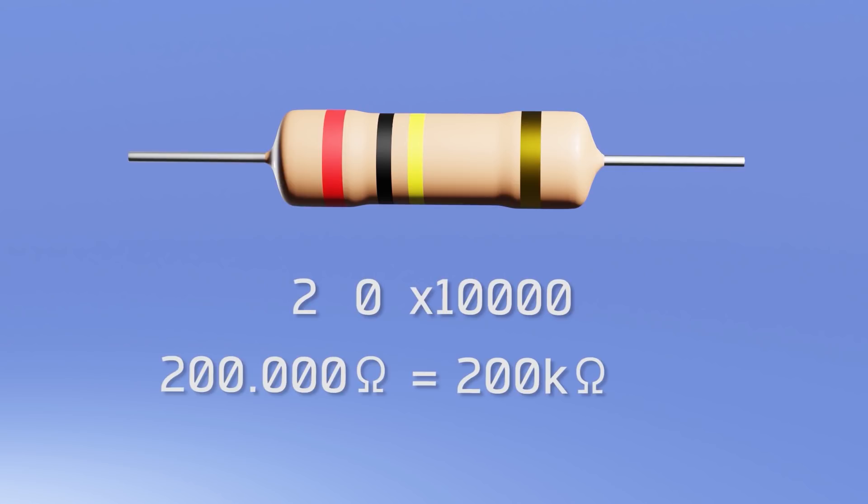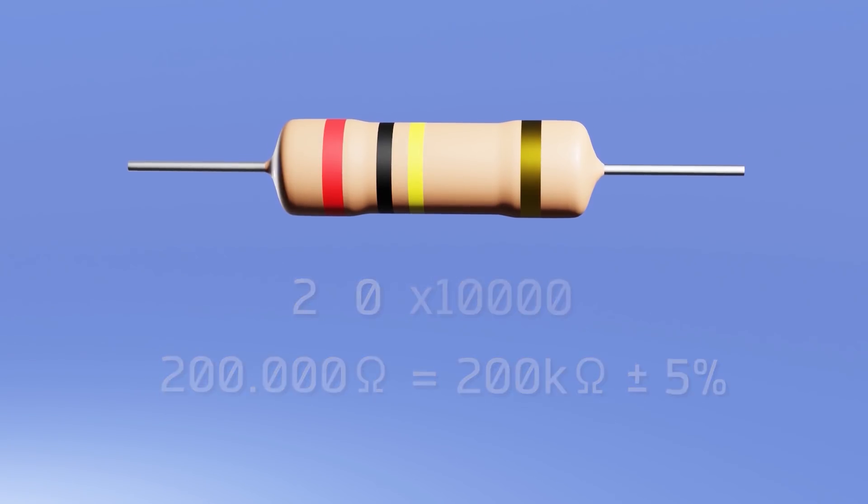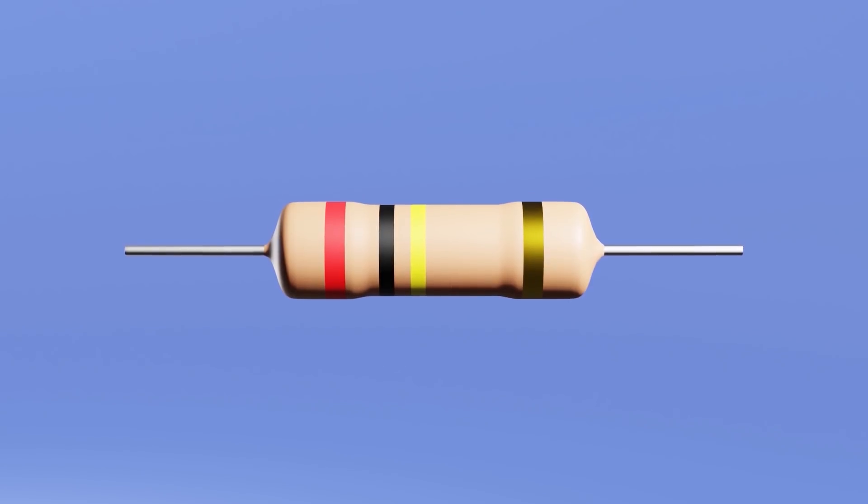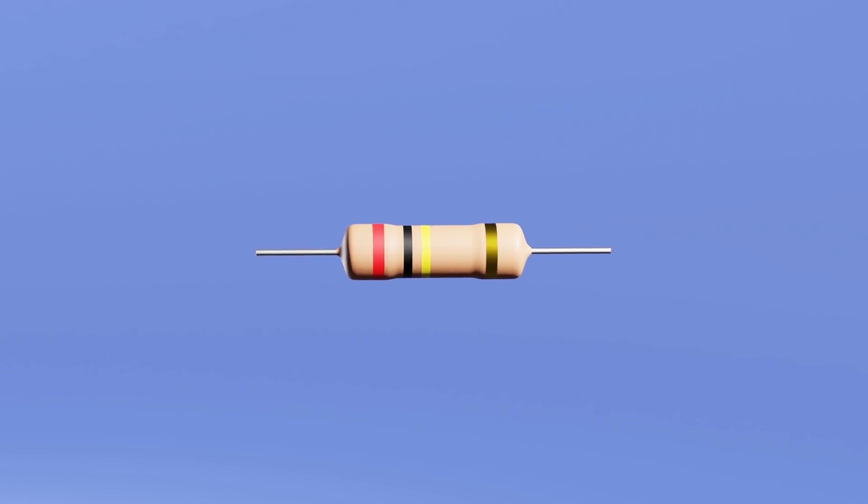And the last band that is left corresponds to the tolerance of this value. As we saw earlier, a lot of precision is required to generate an exact value. In this case, gold means that the tolerance of the value is plus minus 5% of the defined value. May happen that at some point you will find a resistor with more bands, and its reading will vary slightly, but the logic is the same.